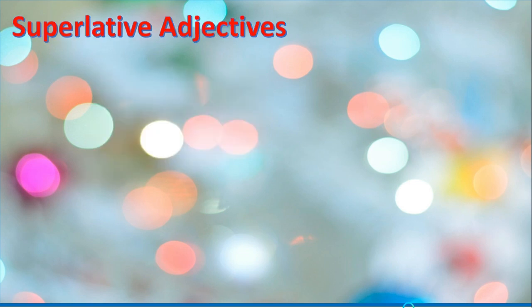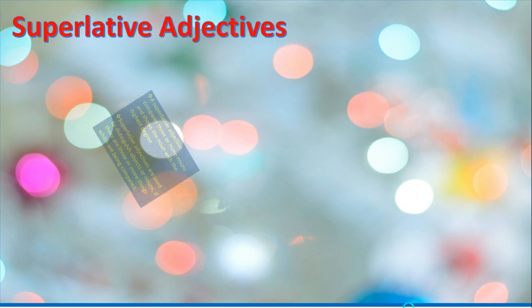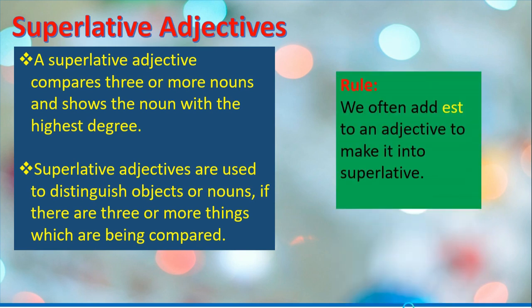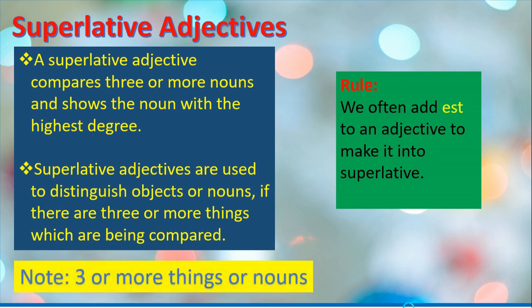Superlative adjectives compare three or more nouns and show the noun with the highest degree. Superlative adjectives are used to distinguish objects or nouns if there are three or more things which are being compared. Note: we are going to compare three or more things or nouns.